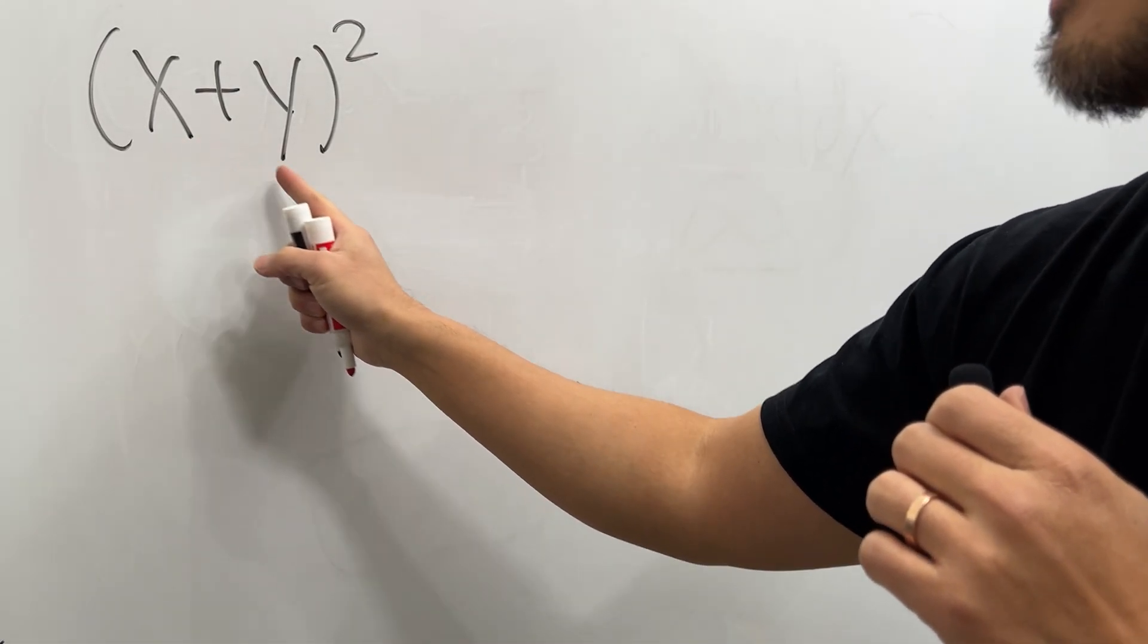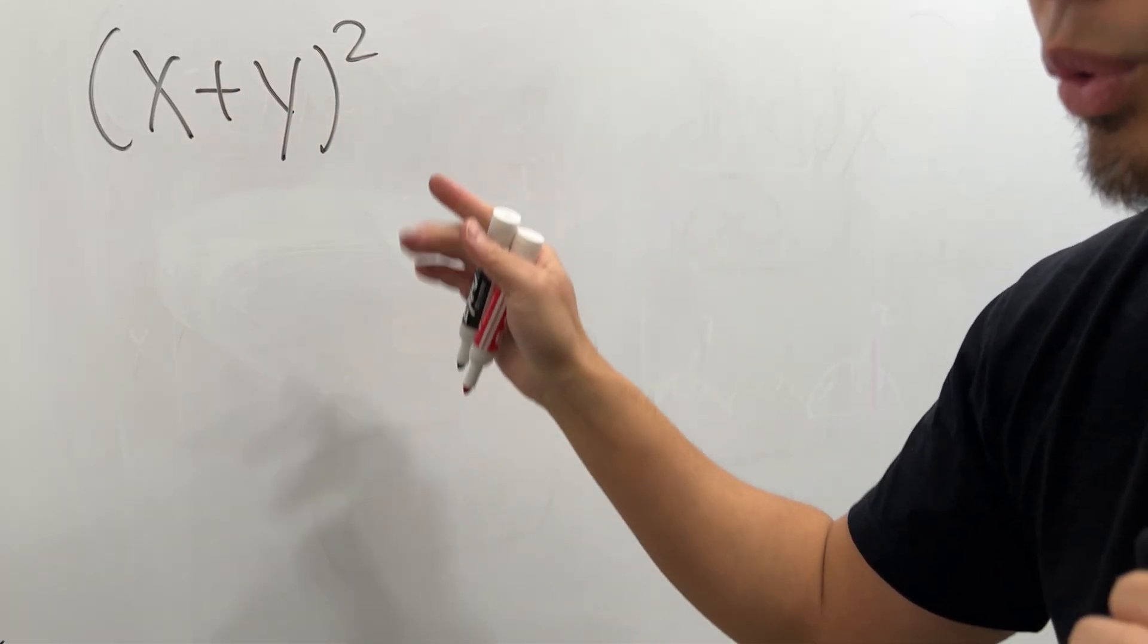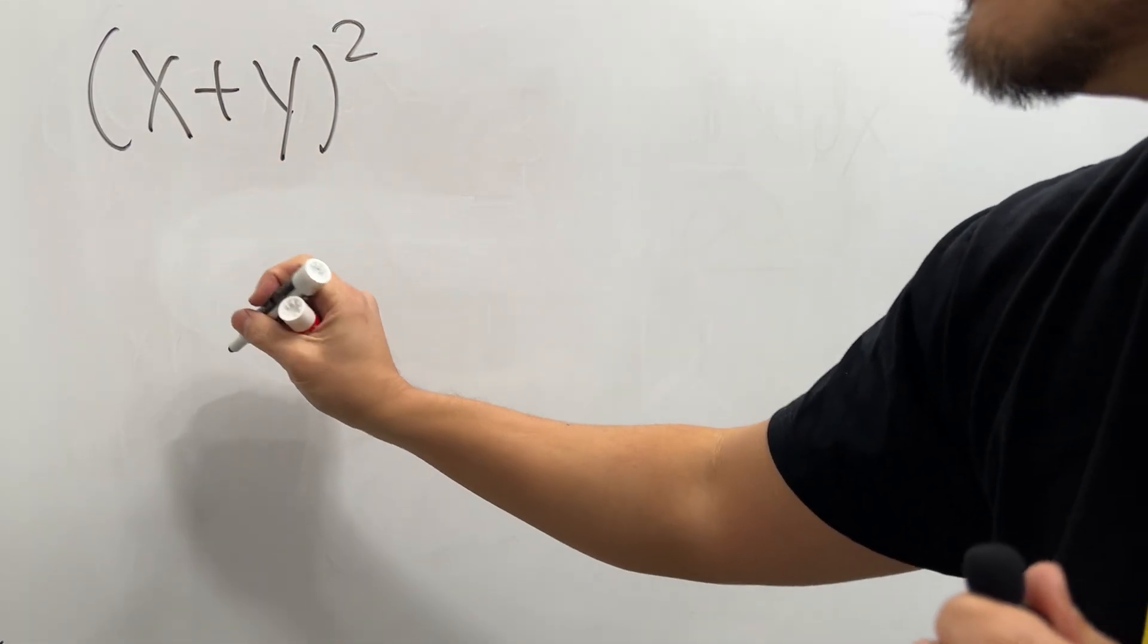This is what math is cool, check this out. Here we have (x+y)² and in fact we use geometry to do this algebra equation. Right here for the x I'm just going to say that's the line segment right here.